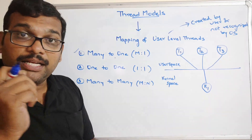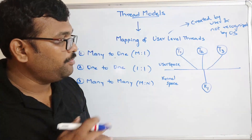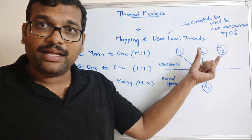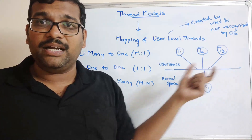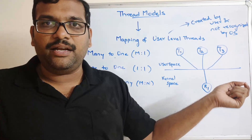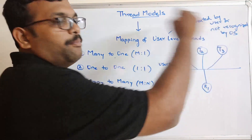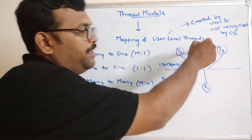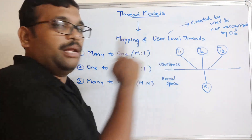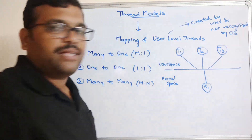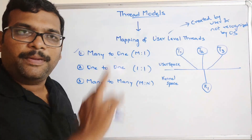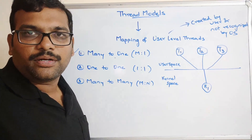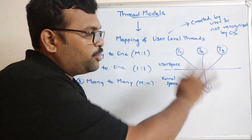Everything is fine, but there is a disadvantage of using this model. If any one of the threads is waiting for an IO operation and moves to the blocking state, immediately the complete process will be in the blocking state. No other thread will be executed by the kernel because all three threads are mapped to that single kernel. The remaining threads have to wait until the blocked thread completes its execution. That's the main drawback — all threads map to the same kernel.